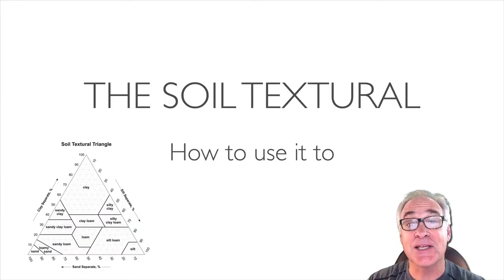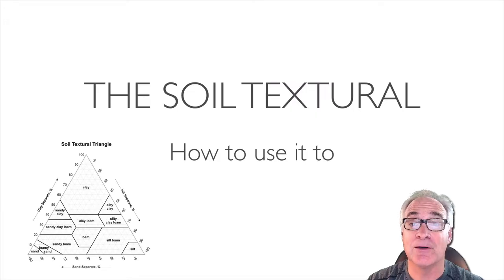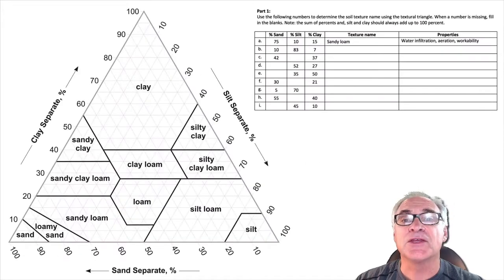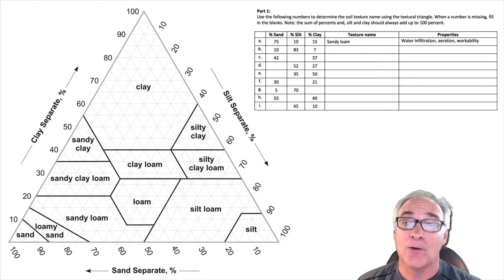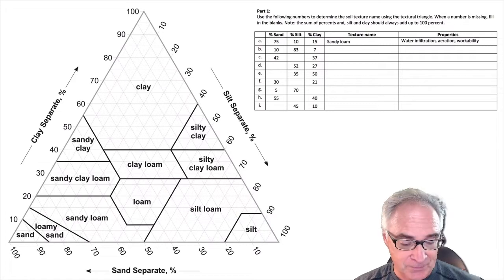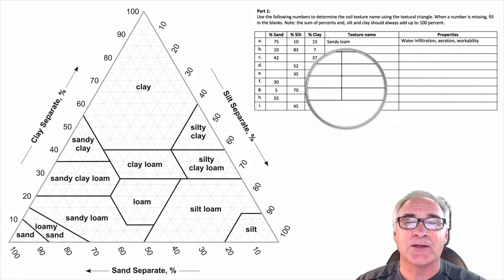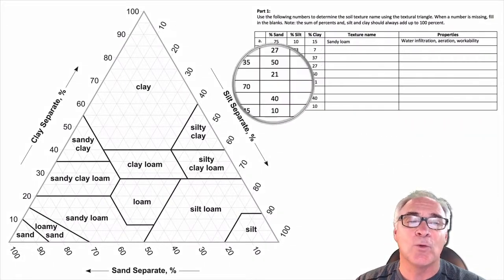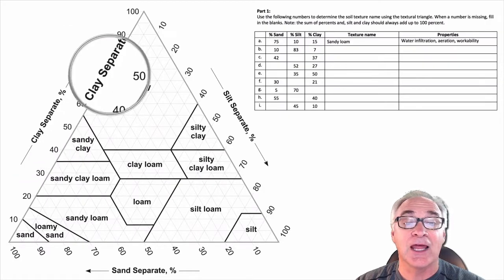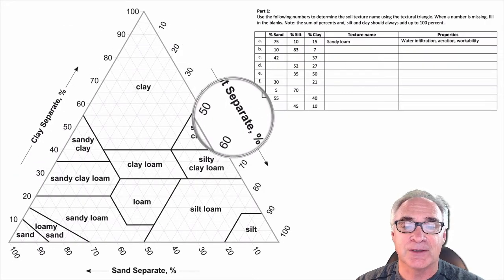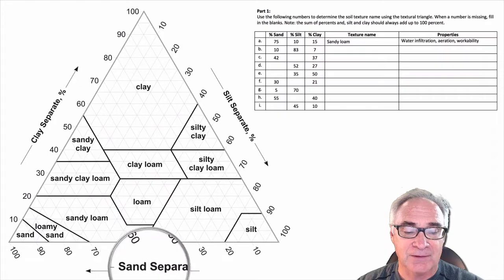Welcome. Today's lesson is how to use the soil textural triangle. This triangle will allow us to determine the soil texture from samples that we take either from the lab or from the field. To give you a better perspective of how this triangle works, it's broken into three pieces: clay, silt, and sand.